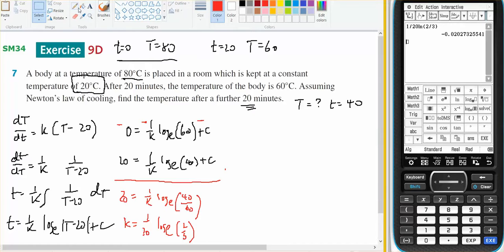So K equals one on 20, log base E of two thirds. Just to double check that on a calculator.